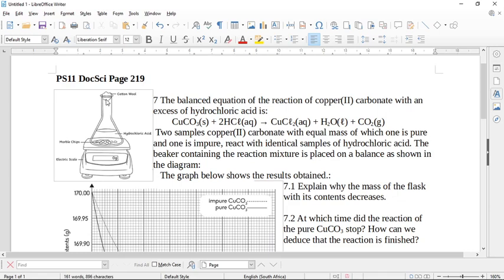They've put the flask on the scale, and they've put a little bud of cotton wool in the top of the flask. And what happens is this reaction, it's the standard reaction - metal carbonate plus an acid gives you a salt, water, and carbon dioxide gas. This is one of the general reactions you're supposed to learn.